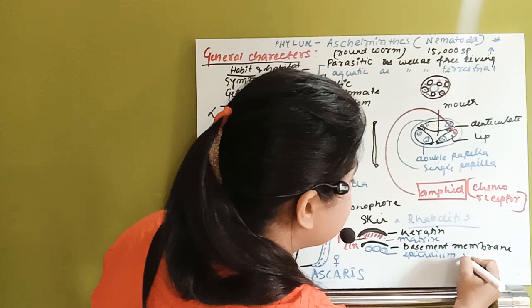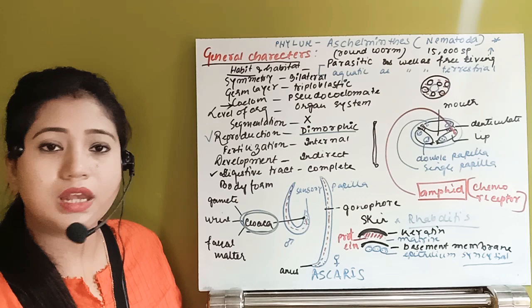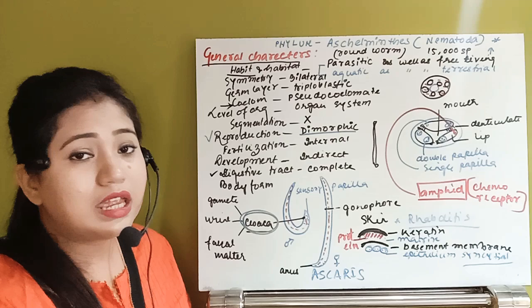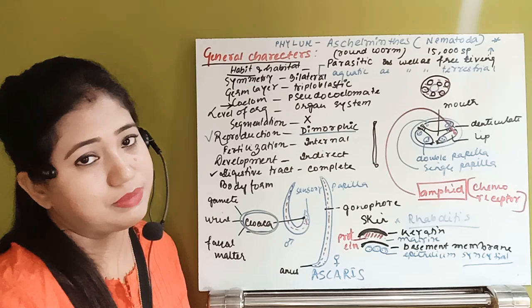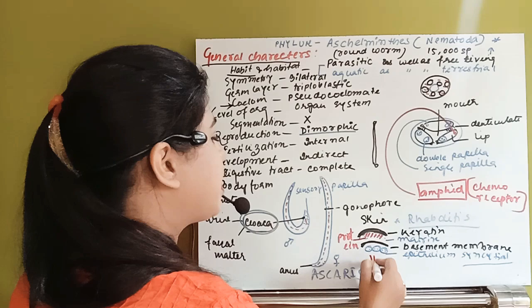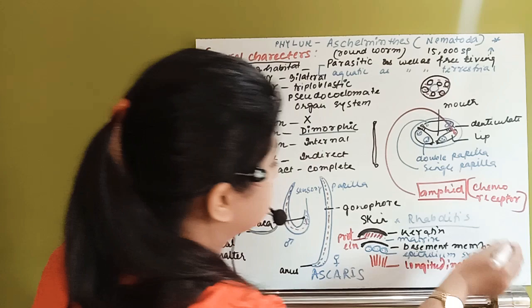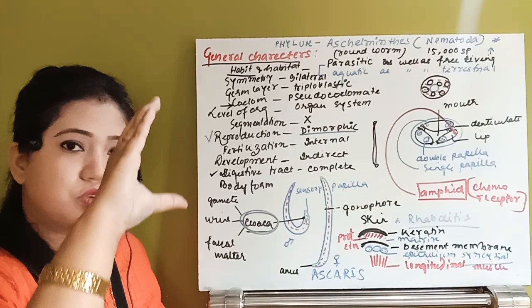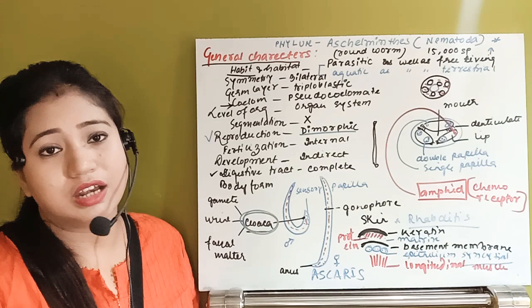The epithelium in this organism is syncytial — meaning the epithelial cells contain more than one nucleus. Just beneath the syncytial epithelium are longitudinal muscles only; circular muscles are absent. These longitudinal muscles help the organism move in a longitudinal direction. That covers all the general characteristics of Phylum Aschelminthes, also called Nematoda or roundworms.